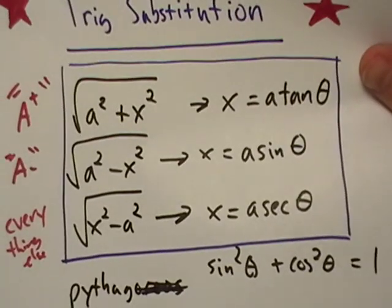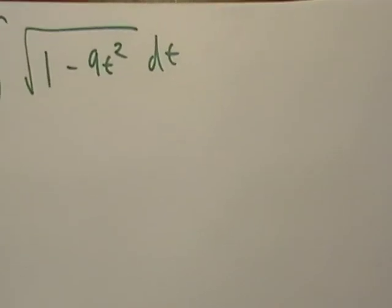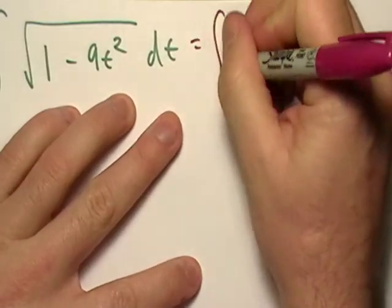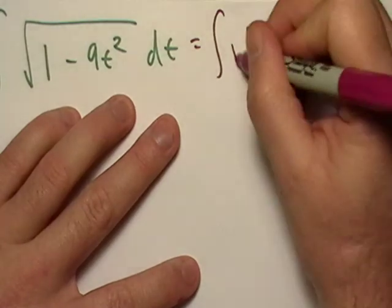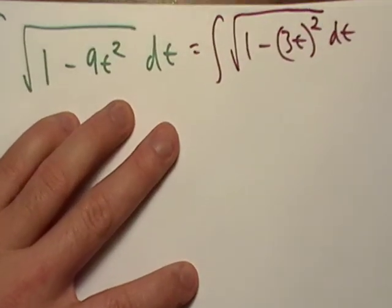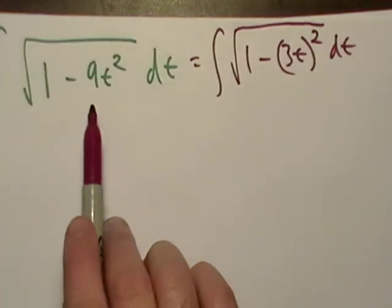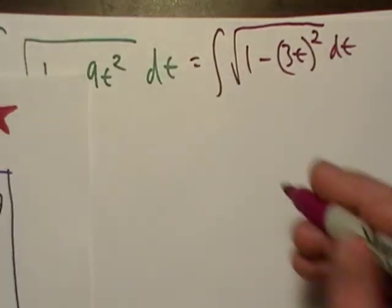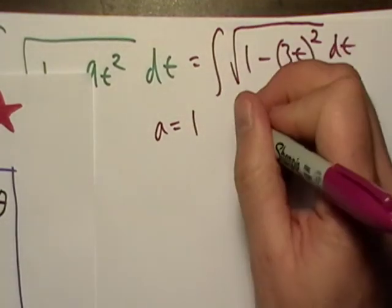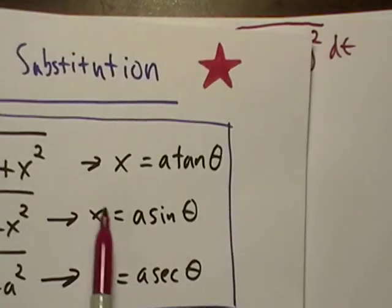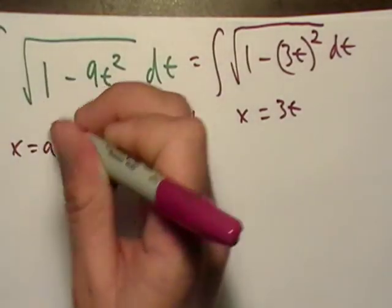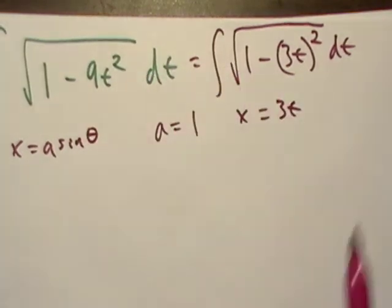Let's just dive right into it. So let's right away rewrite this: integral of square root of 1 minus 3t squared dt. So we saw that this looked like the a minus situation and a was equal to 1 and x was equal to 3t. So we're going to use our little substitution there.